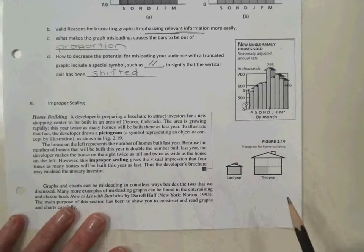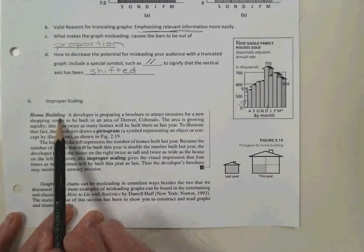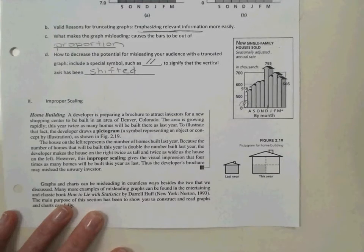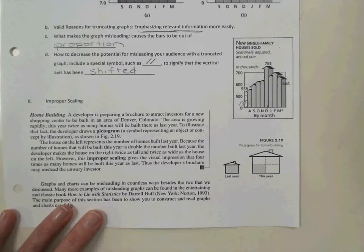The other thing we'll see is improper scaling. You can see our example to the right. With home building, there's a developer preparing a brochure to attract investors for a new shopping center to be built in an area in Denver, Colorado. Sort of like what we have at the Markham Apartments and shopping center that they're putting in there.